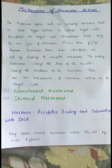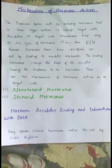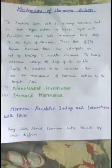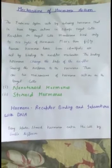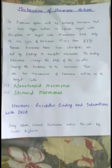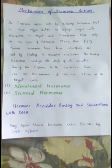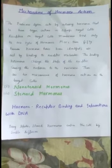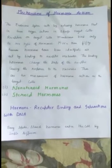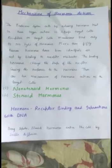Today's topic is Mechanism of Hormone Action. The endocrine system acts by releasing hormones that in turn trigger actions in specific target cells. Receptors on target cell membranes bind only to one type of hormone. More than 50 human hormones have been identified, and all act by binding to receptor molecules.